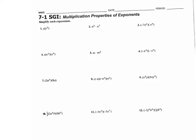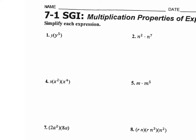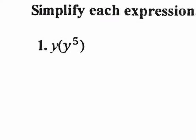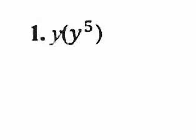I'm going to go over worksheet 7.1 SGI — it's a two-sided worksheet. We're going to do the odd ones on this video. It's a green paper I handed out, so we're reviewing the first three rules. When you have the same base and you're multiplying, you add the exponents. The first y has an exponent of 1, so 1 plus 5 is 6 — it's y to the sixth.